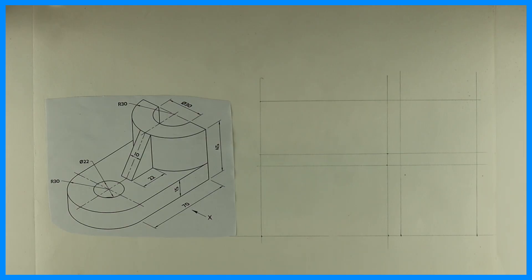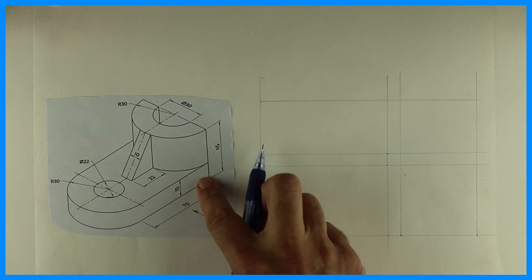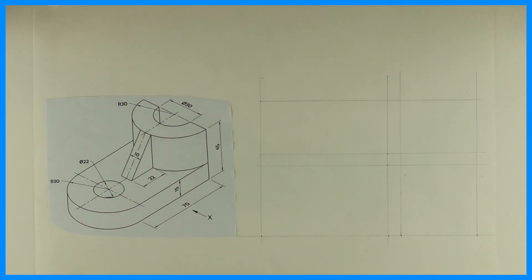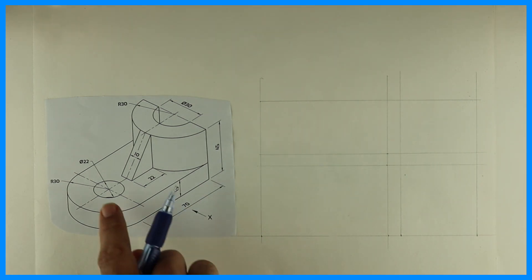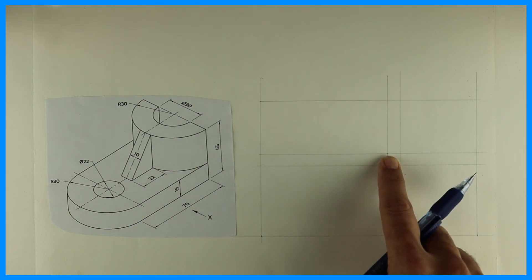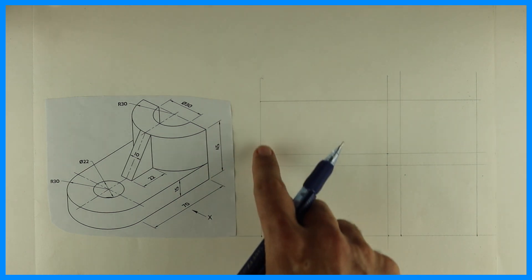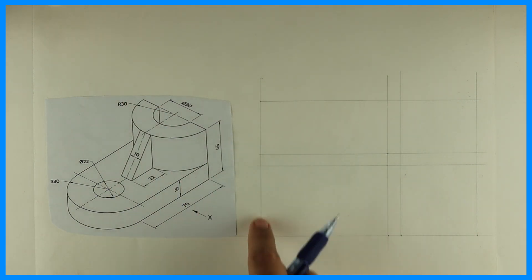Welcome to technical drawing. Today we are going to draw this sum in orthographic. We'll see from here length, height, and width. We are drawing in first angle, so length is 70 plus 30, 100, height is 45, and width is 60. Radius 30.